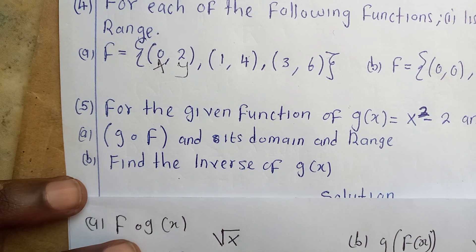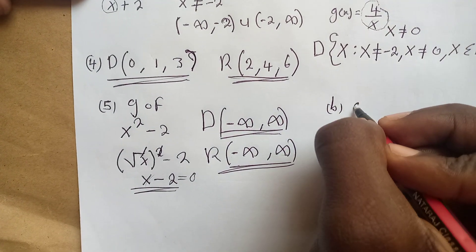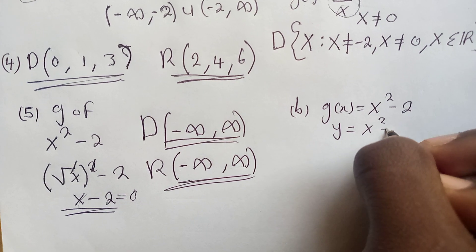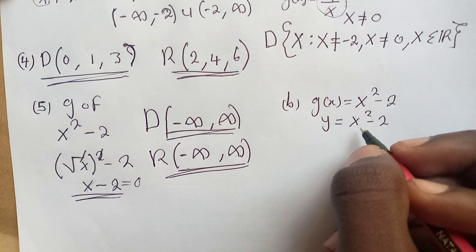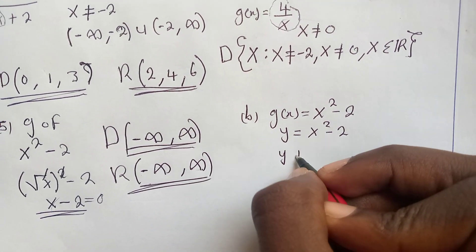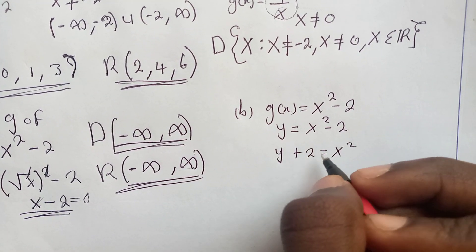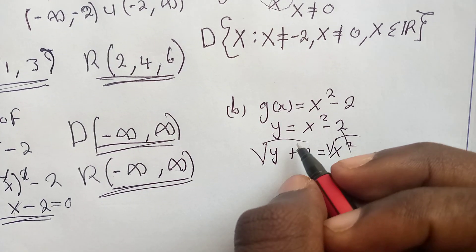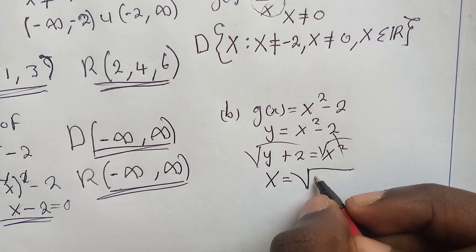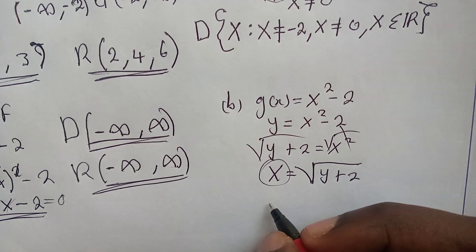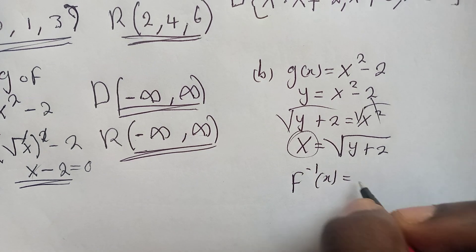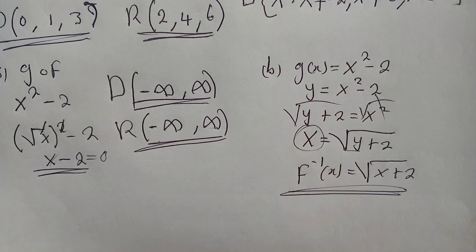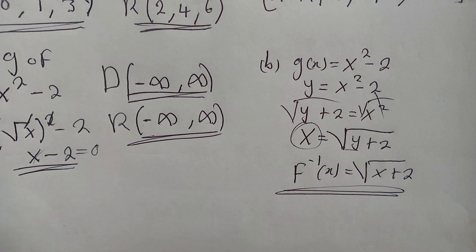Now find the inverse of g(x) = x² − 2. Let y = x² − 2, then y + 2 = x². Taking the square root of both sides: x = √(y + 2). Replacing y with x, the inverse is g⁻¹(x) = √(x + 2). That is how you find the inverse.